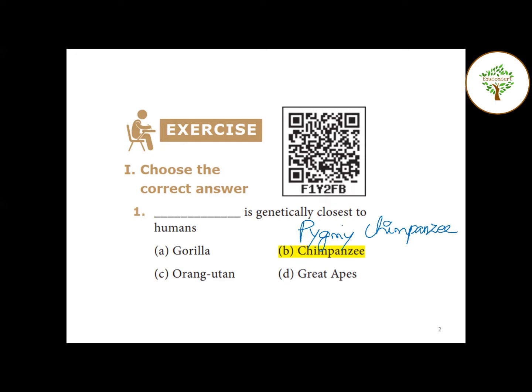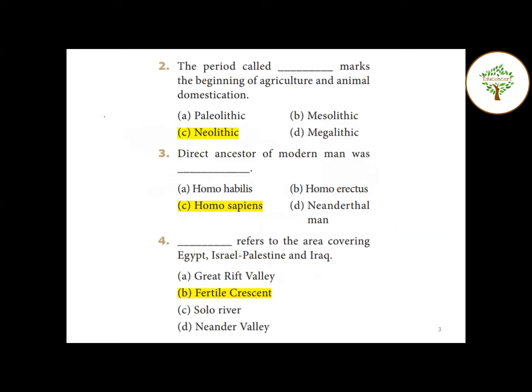Second question: The period that marks the beginning of Agriculture and Animal Domestication. The answer is the Neolithic Period - Option C.